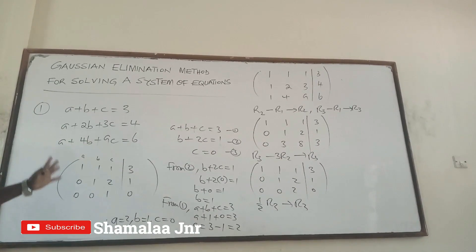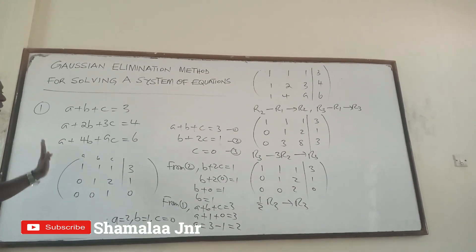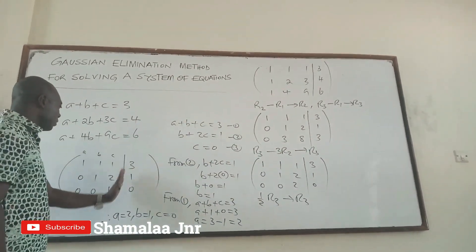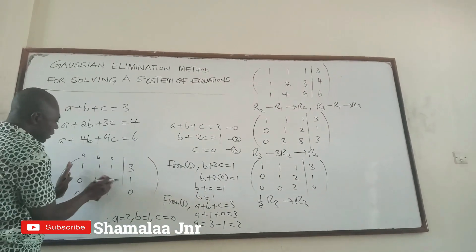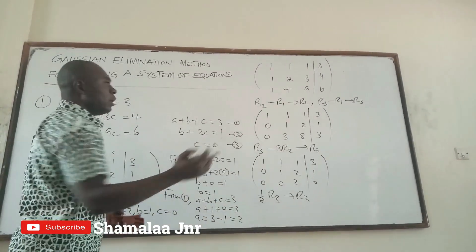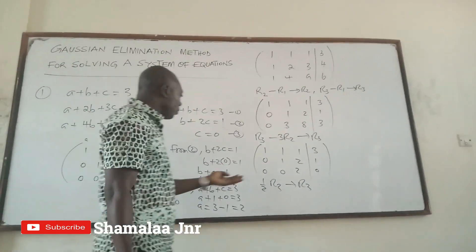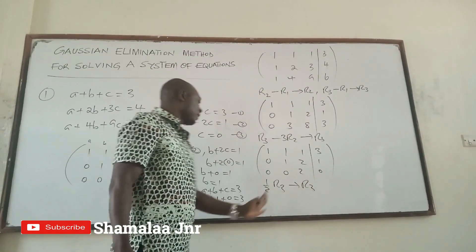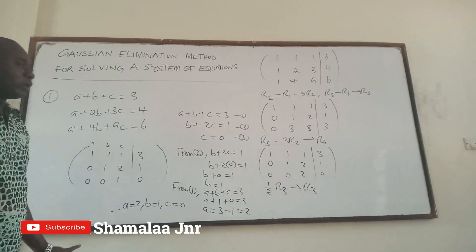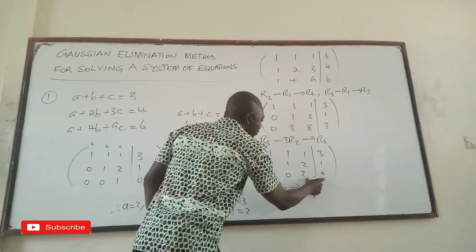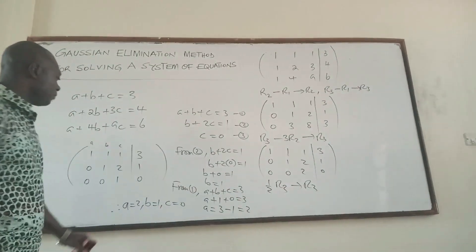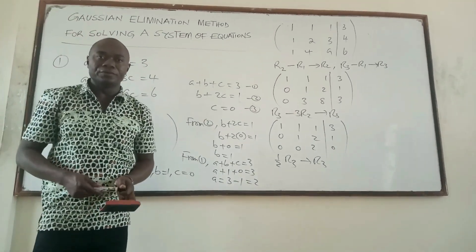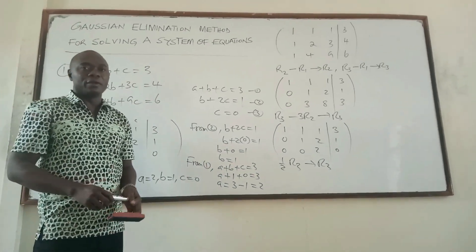Basically, this is how the Gaussian elimination method works. First, get an augmented matrix by fusing the coefficient matrix with the right-hand side values. Use elementary row operations to reduce the left-hand side to row echelon form, then use back substitution to obtain the values. It is not difficult at all. Thank you very much viewers for your attention. Subscribe to my YouTube channel, Samadar Junior.